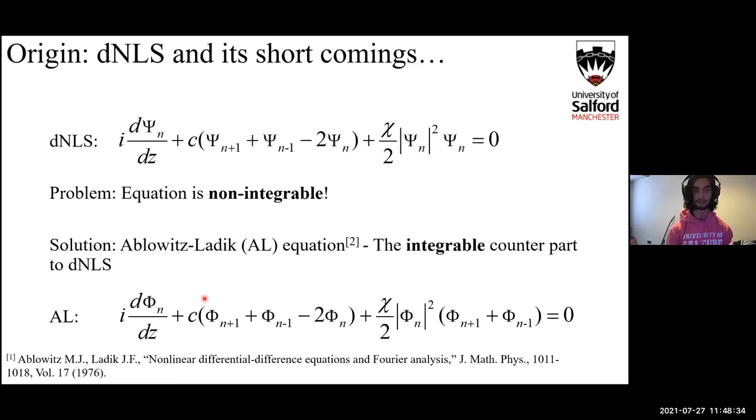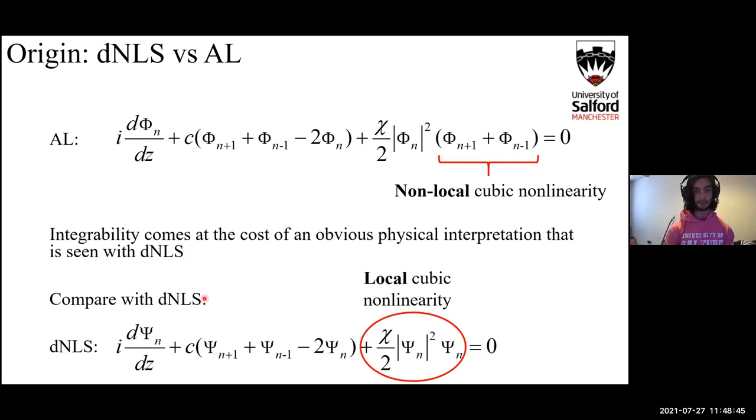So the solution to this was introduced in 1976 by two people called Ablowitz and Ladik, and they formed a set of equations called the Ablowitz-Ladik equations. Here is one of them, and this is the integrable counterpart to the NLS, so it can have exact solutions which makes it much more favorable for modeling. The discrepancy between these two equations lies in the nonlinear term. As can be seen here, the Ablowitz-Ladik has got non-local cubic nonlinearity compared to the dNLS's local. Also, the chi term in the Ablowitz-Ladik isn't quite as clearly physically cut as in the dNLS. So the trade-off for this integrability is a lack of physical interpretation or a much more complex one.